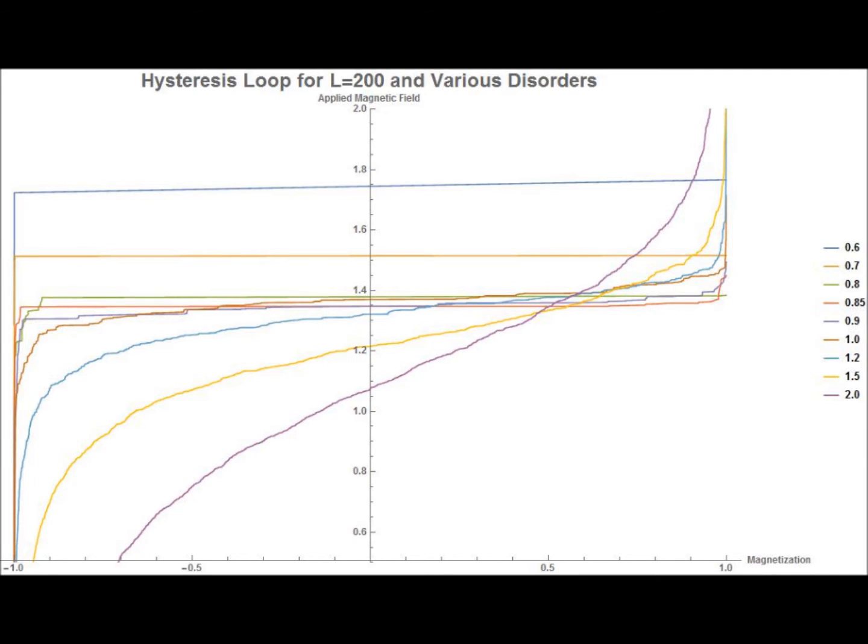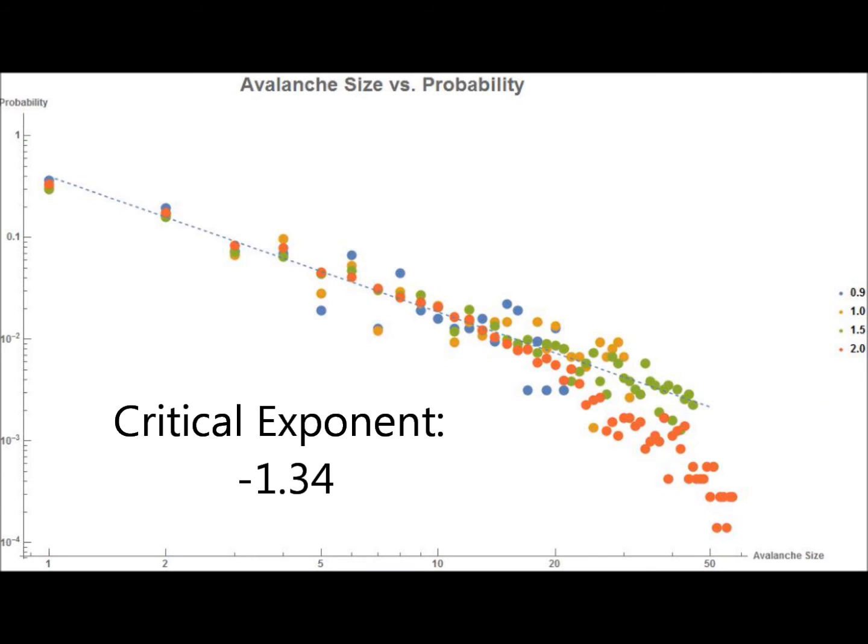In the 2D case, scaling and determining critical exponents has a few issues. However, I did find that when I plotted the probability of an avalanche size occurring versus the avalanche size, there was some data collapse. These four disorders resulted in a critical exponent of negative 1.34. So there must be some universality going on here.